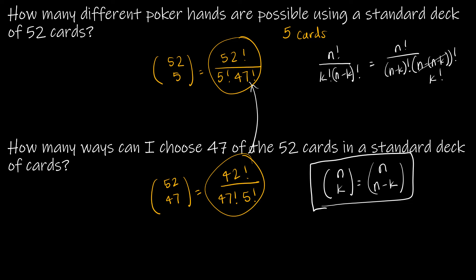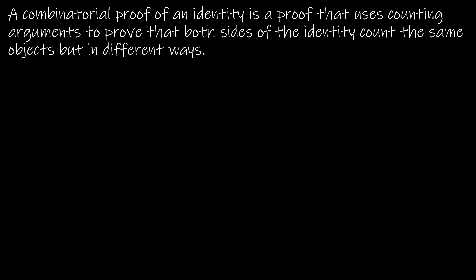So what I want to do now is take a look at a combinatorial proof. So what exactly is a combinatorial proof? Well, it's not like a normal mathematical proof. It is essentially proving that both sides of an identity count the same objects in a different way. So we were just looking at the fact that 52 choose 5 was the same solution as 52 choose 47. So we showed that mathematically. How could we talk about this combinatorially?